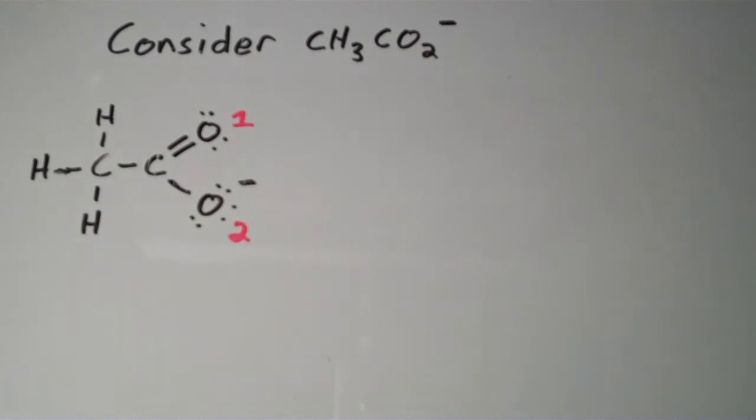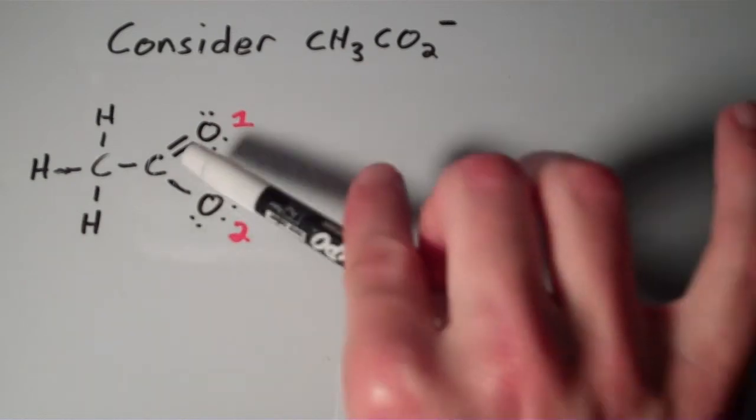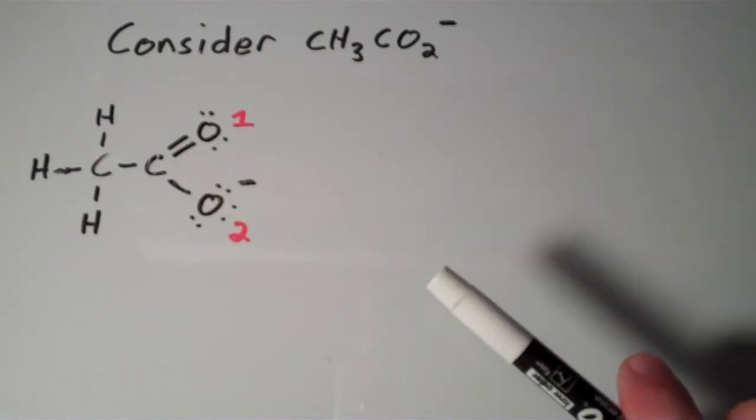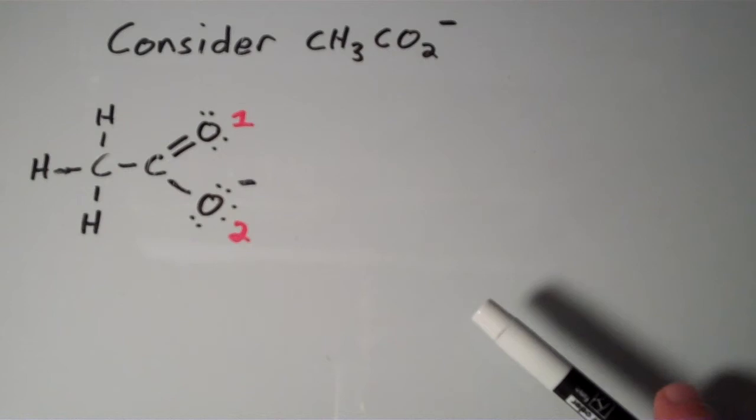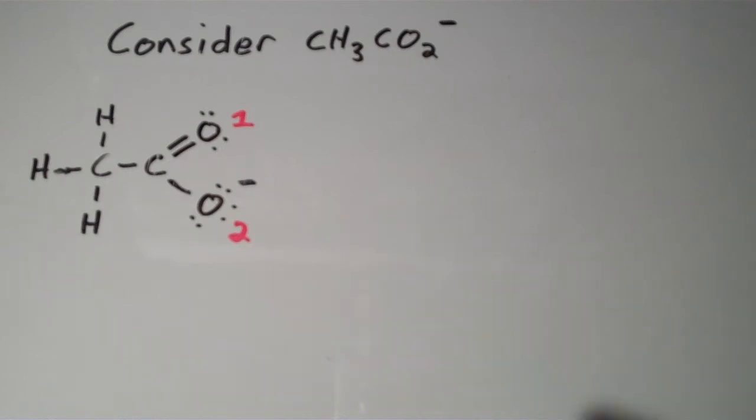Because double bonds are in general shorter and stronger than single bonds. Experimental evidence however has shown that both of these bond lengths are equivalent. And the bond length of these two bonds is somewhere between that of a carbon-oxygen single bond and a carbon-oxygen double bond.